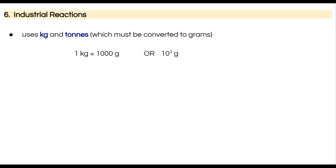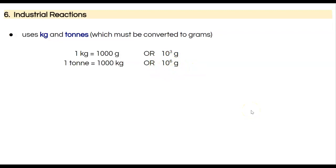A kilogram is a thousand grams — most of you are probably familiar with that. A metric ton is a thousand kilograms, so a thousand grams in a kilogram and a thousand kilograms in a ton gives us 10 to the power of 6 grams. I would encourage you to convert to grams when working with formulas, rather than converting molar masses to different units.